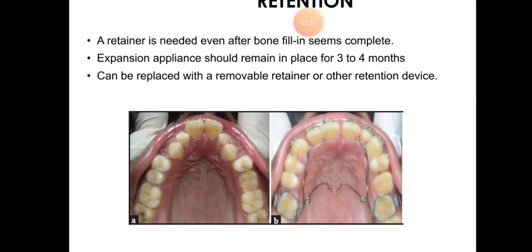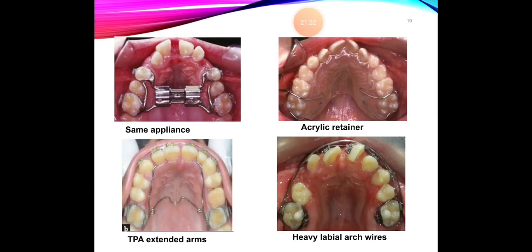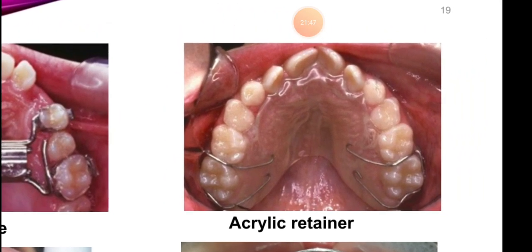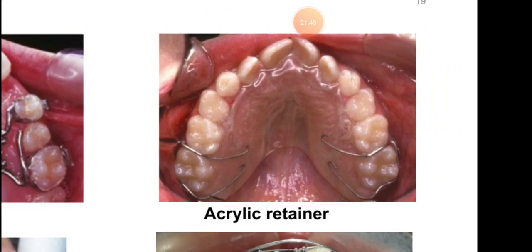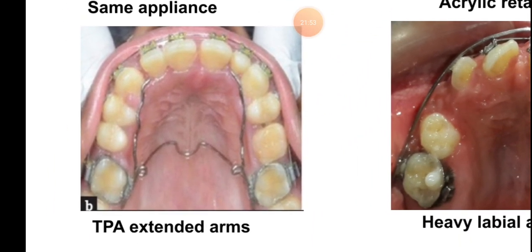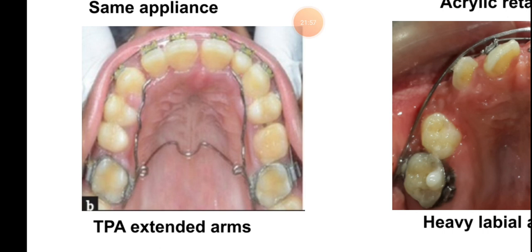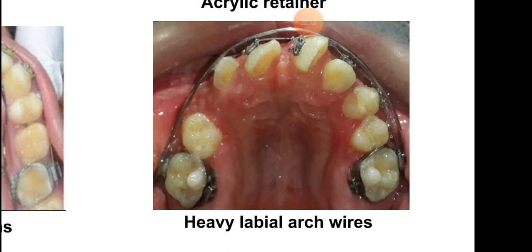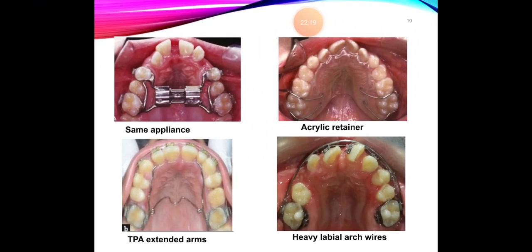Here is an expansion device shown. The expander can be replaced or stabilized with the same appliance left in place for three to four months, or stabilized by an acrylic retainer. We can also see a transpalatal arch with extended arms connecting both molars extending anteriorly, which will not let the intercanine, interpremolar, and intermolar width relapse. Alternatively, a heavy labial arch wire placed labially can be used as a retainer to prevent relapse in expansion cases.